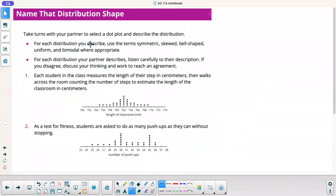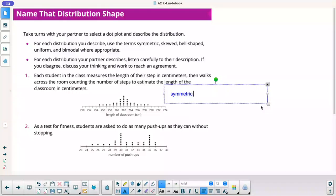Take turns with your partner to select the dot plot and describe the distribution. For each distribution you describe, use the term symmetric, skewed, bell-shaped, uniform, and bimodal where appropriate. This first one, I would say that it is symmetric and bell-shaped.